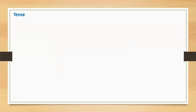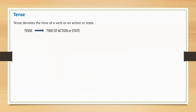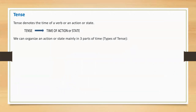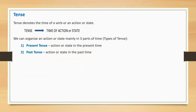Tense. Tense denotes the time of a verb or an action or state. We can organize an action or state mainly in three parts of time: present tense, past tense, and future tense.